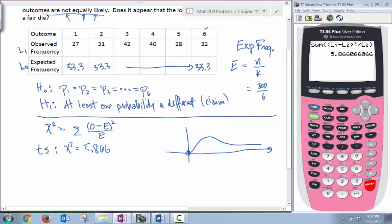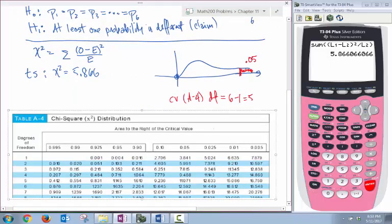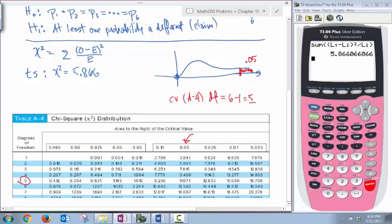Now I want to find my critical value from table A4. We need degrees of freedom, which is K minus 1, or 5. We want a 0.05 significance level. Looking at table A4 with 5 degrees of freedom and 5% area on the right side, we get 11.071. My test statistic of 5.866 will not be in the critical region.